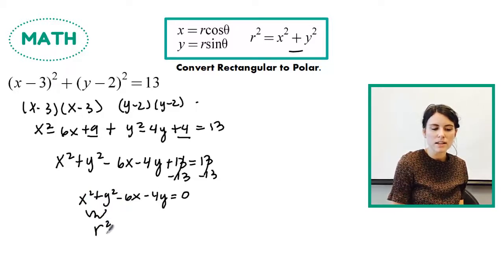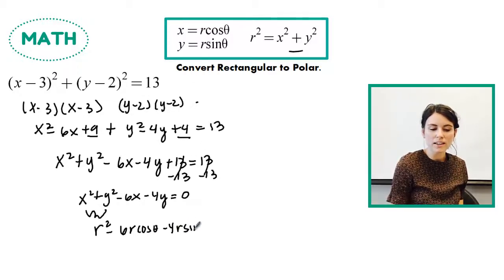That becomes r squared minus 6. We know x is r cosine theta, so I'm going to write that as r cosine theta, minus 4y, y is r sine theta, and this is all equal to 0.